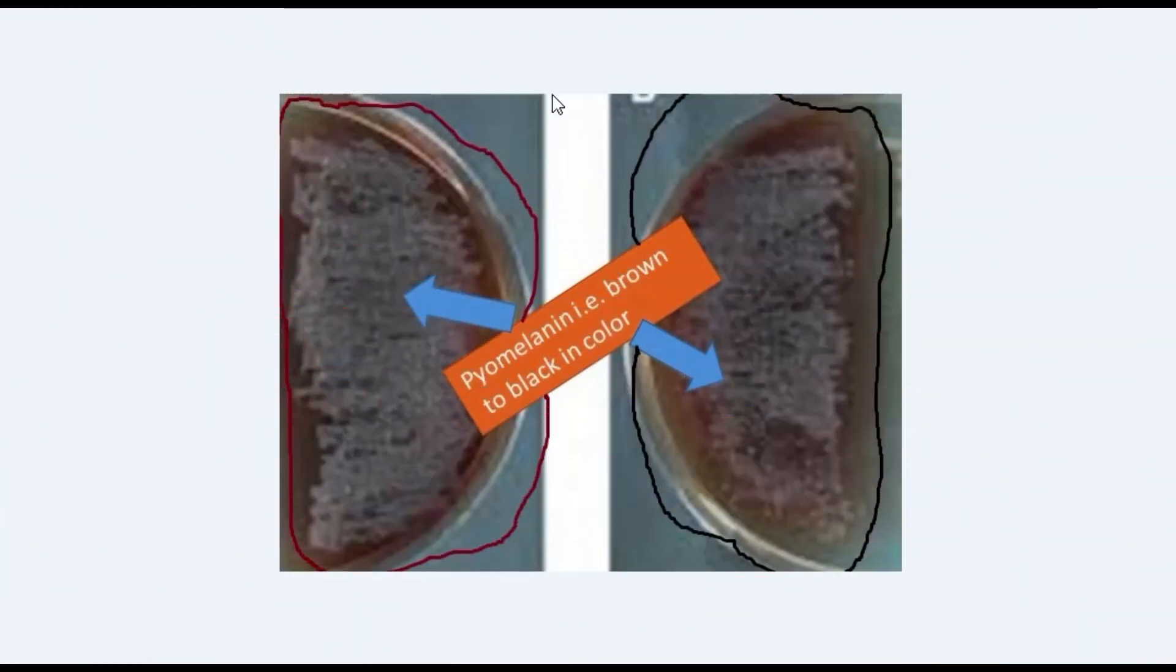Number four, that is last: pyomelanin. It is uncommon, less than one percent of organisms form this pigment. It is chemically unrelated to animal melanin. In this way you became able to know all types of pigments of Pseudomonas.